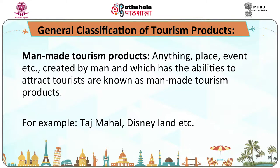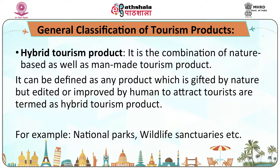Man-made tourism products: anything — place, event, etc. — created by man which has the ability to attract tourists are known as man-made tourism products. For example, Taj Mahal, Disneyland, etc. Hybrid tourism product: it is the combination of nature-based as well as man-made tourism products. It can be defined as a product which is gifted by nature but edited or improved by human to attract tourists. For example, national parks, wildlife sanctuaries, etc.